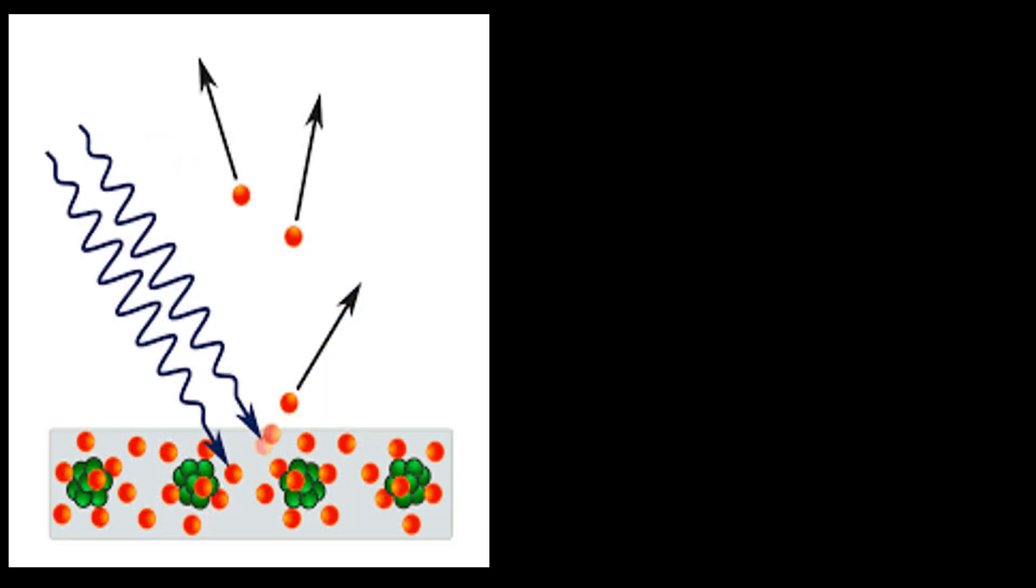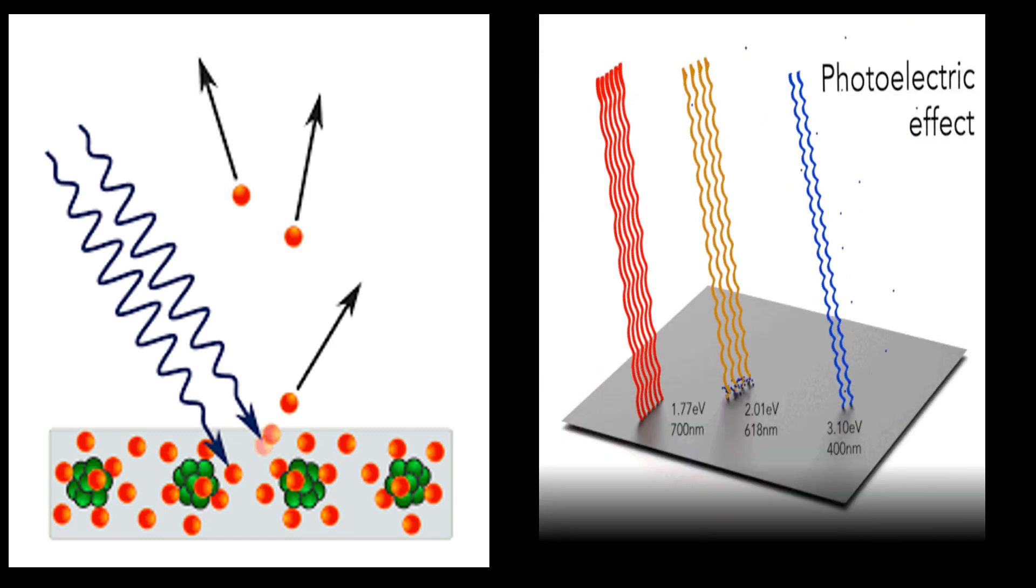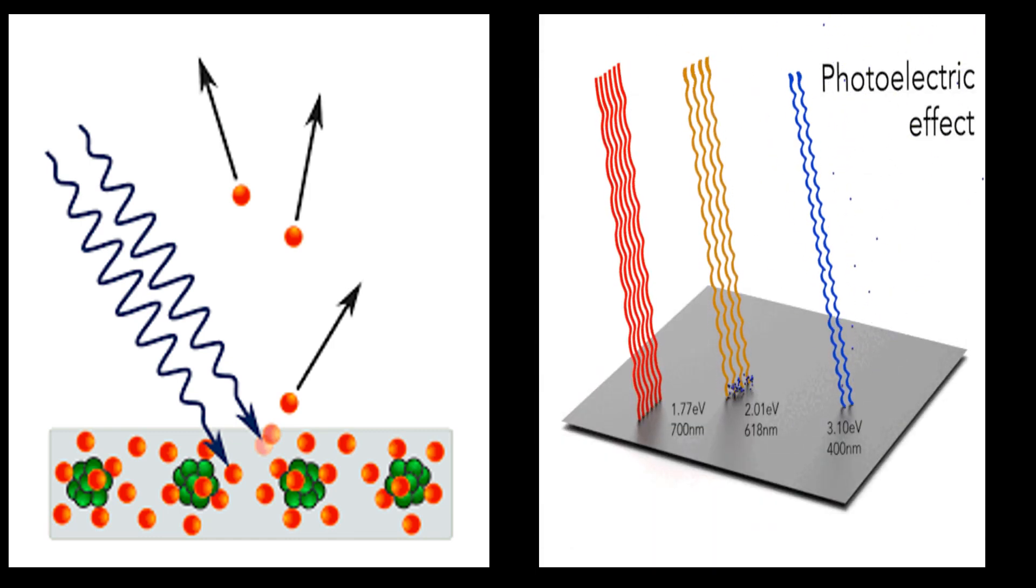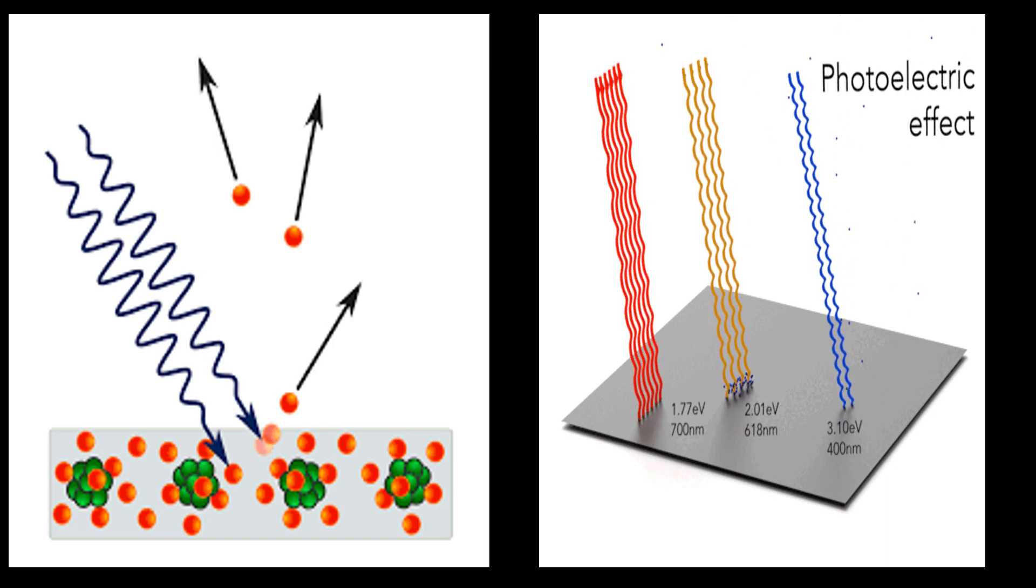When you fire a beam of light at a group of atoms, the photons of the beam, which may be of different colors and energies, will randomly strike the electrons of the substance. If an electron is met with a highly energetic photon, it will be emitted, and if not, it will not be emitted. This is the photoelectric effect.